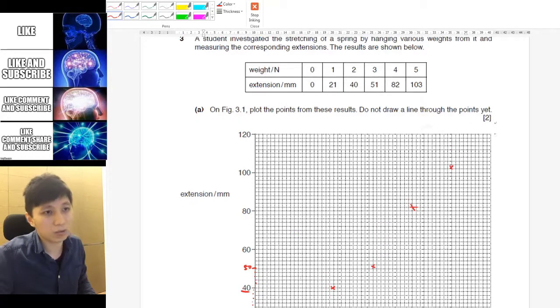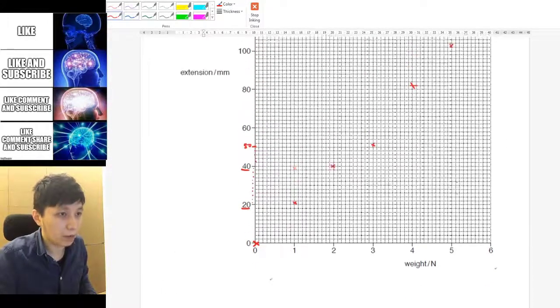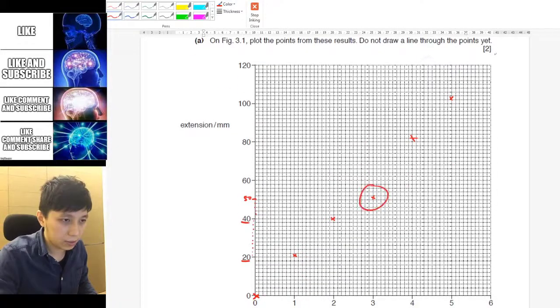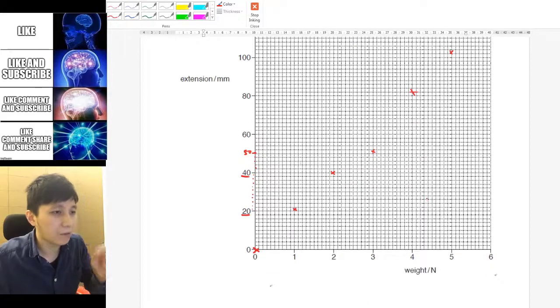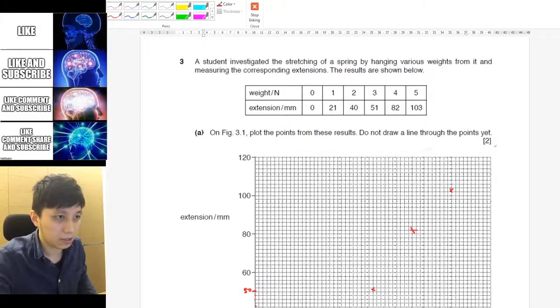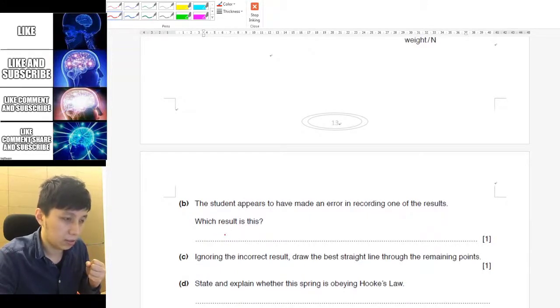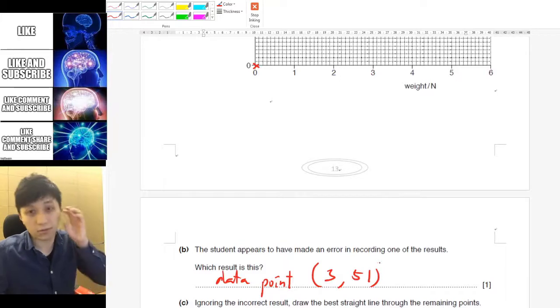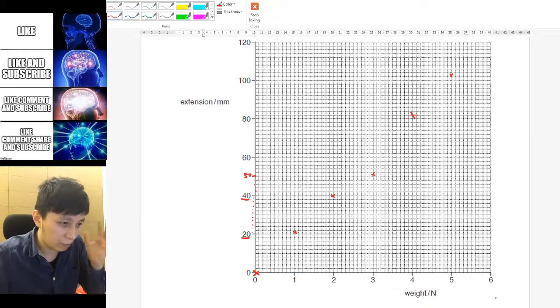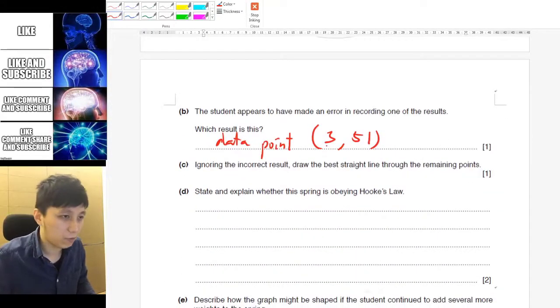Now, part B asks you, there is an error, and which result is it? So, if I were you, I mean, obviously, we should all know that this is the one that is being the anomaly. Right? Because the other ones appear to be one straight line. In fact, the marking scheme will allow you to say the fourth data. Because this is literally the fourth data. But then, what I would say, I think I would say that result is the data point with the coordinate 3 newton with 51. So, 3, 51. Then, that is exact. And you can't argue. Because some people may not count the first one. So, that would become the third instead of the fourth. And I don't want to make those confusing arguments. So, let's just say data point coordinate 3, 51.